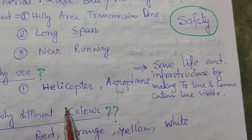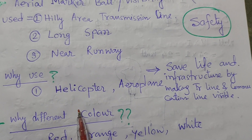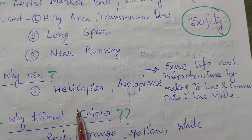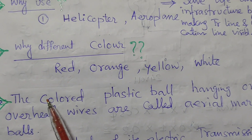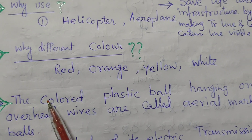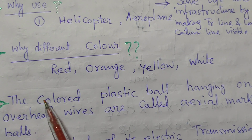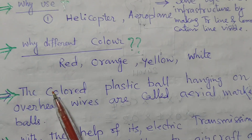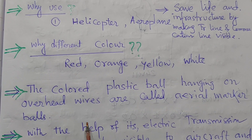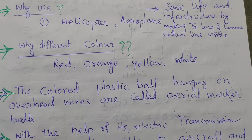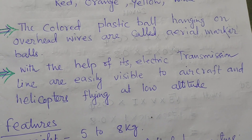Safety is the main criteria and main objective. These balls are used for helicopters and airplanes to save lives and infrastructure by marking or installing the ball on transmission and communications lines to make them visible. Different colors — red, orange, yellow, and white — are installed for different reasons.